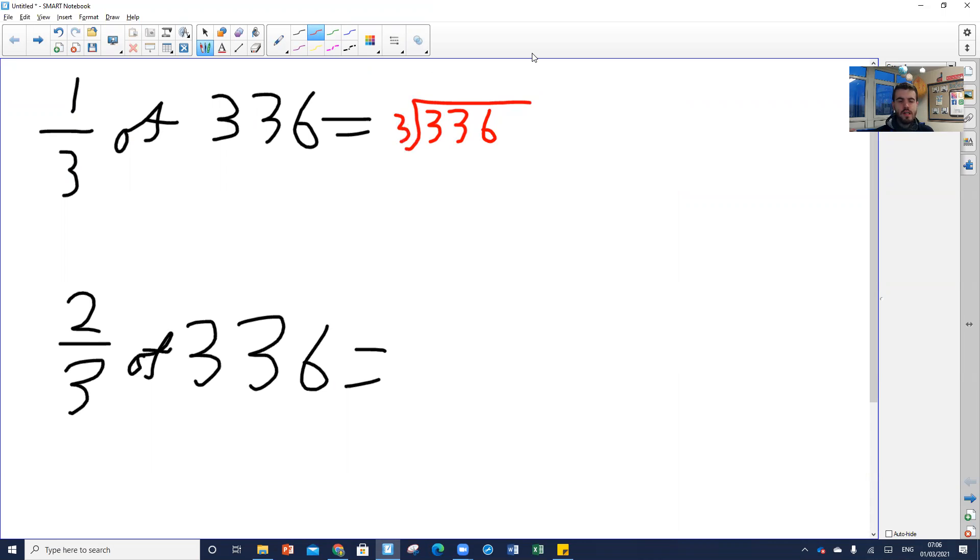We're dividing that by three because the denominator over here, the number at the bottom is a three. So dividing our big number by the number at the bottom. I can fit one three into three. I can fit one three into three. I can fit two threes into six. So our answer to that is 112.